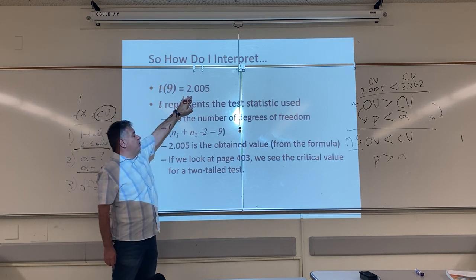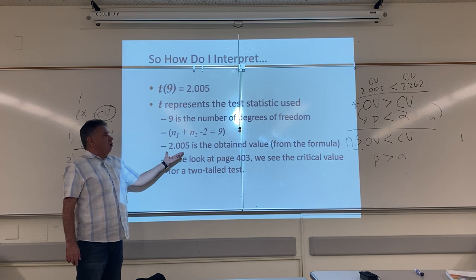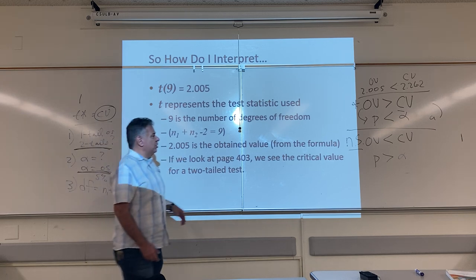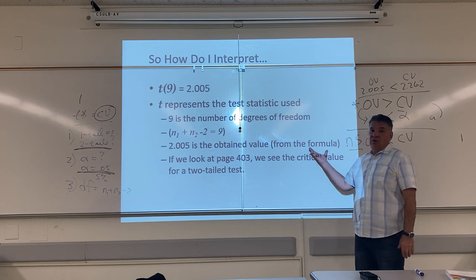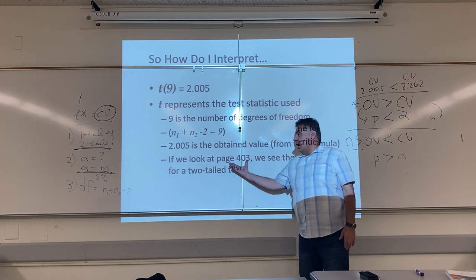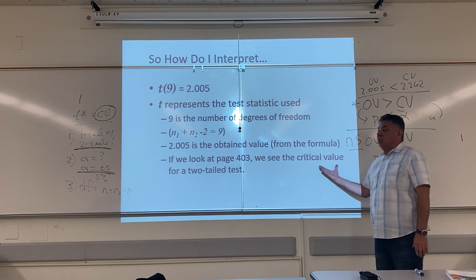Here is my OV, my obtained value, 2.005. Where did you get this answer? It's the answer that I obtained or observed or found from the formula. And again, I looked at page 403. I looked up the critical value.